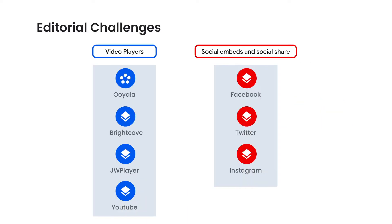AMP has all the components that your editorial team needs, like video players — we use Uyala, then Brightcove, now JW Player, and YouTube. They are all supported. Social embeds and social share: Facebook, Twitter, Instagram, and everything that can be embedded in an iframe.